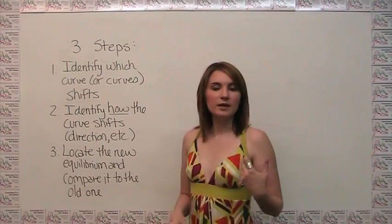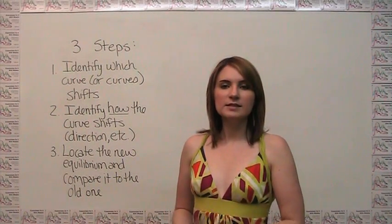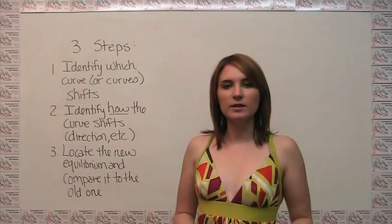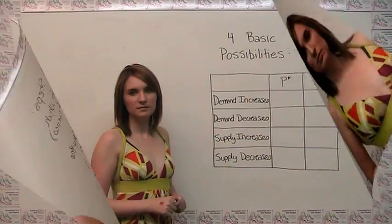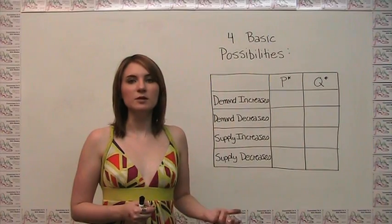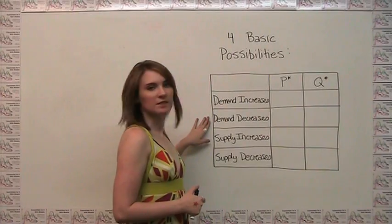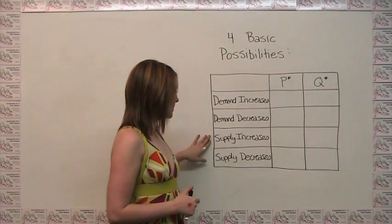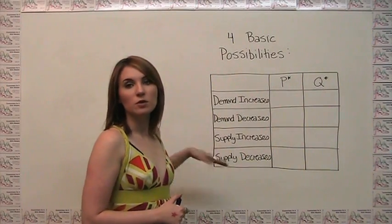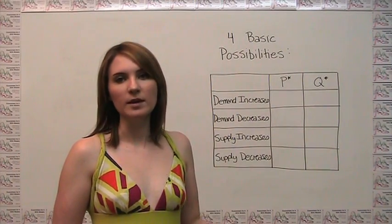The third step is to locate the new equilibrium and then compare it to the original one to see, at least qualitatively, in which direction equilibrium price and quantity go. To start us off, we have four basic changes that could result in a new equilibrium price and quantity: an increase in demand, a decrease in demand, an increase in supply, or a decrease in supply. We'll go through these four cases graphically and then do one algebraic example.